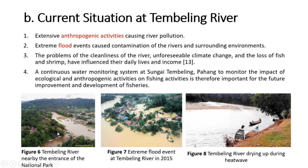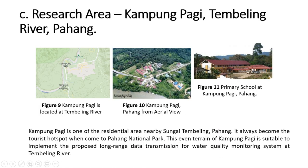From this figure you can see the massive destruction caused by floods and extreme human and boating activities at the entrance of Pahang National Park, which has made the river muddy and affected nearby residential areas. During the dry season, the Tembeling River also dries up due to heat waves. The proposed research area is Kampung Pagi, Tembeling River, Pahang. Kampung Pagi is a residential area near Sungai Tembeling and is a main hotspot for tourists visiting Pahang National Park. The terrain here is quite even, making it suitable to implement the proposed long-range data transmission for water quality monitoring system.